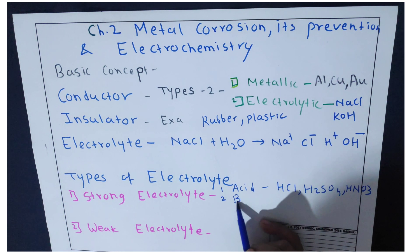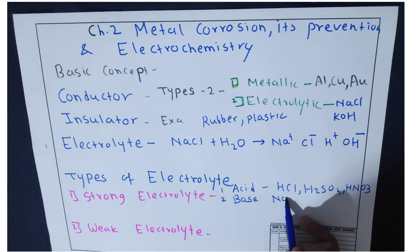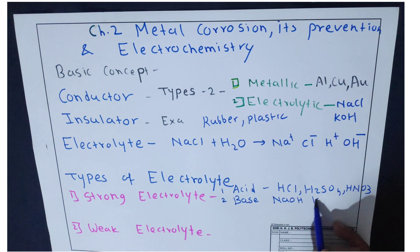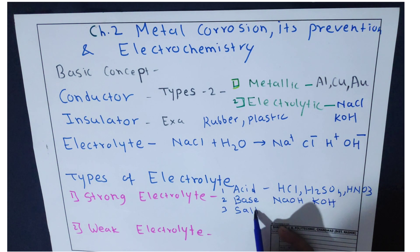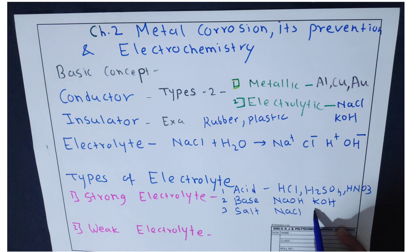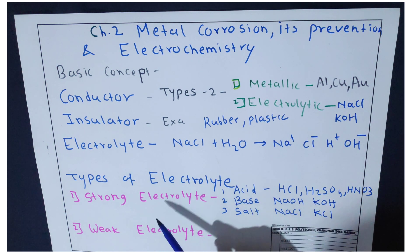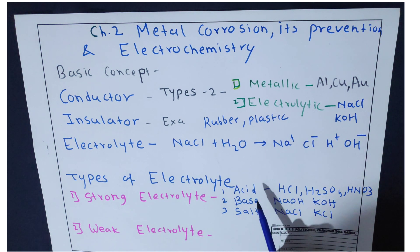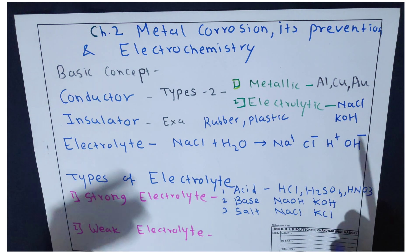Strong electrolytes also include strong bases like NaOH and KOH, and strong salts like NaCl and KCl. These are examples of strong electrolytes — strong acid, strong base, and strong salt — and they liberate more ions in solution, therefore they are known as strong electrolytes.